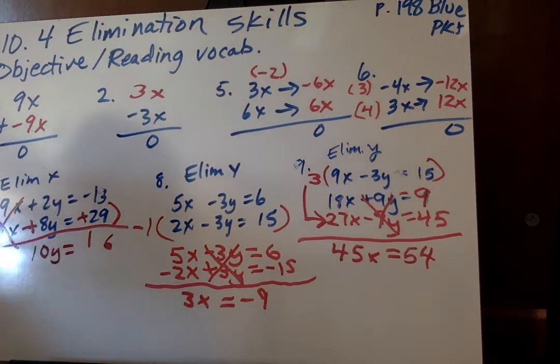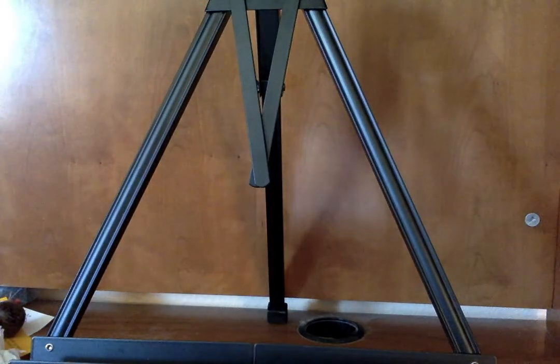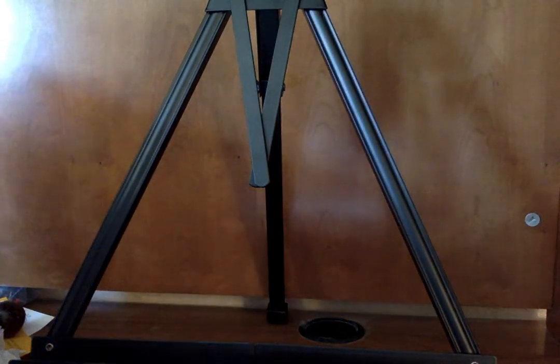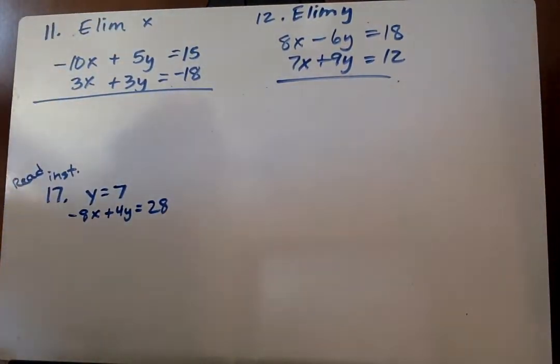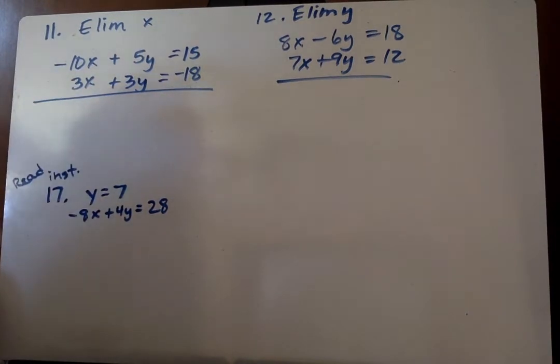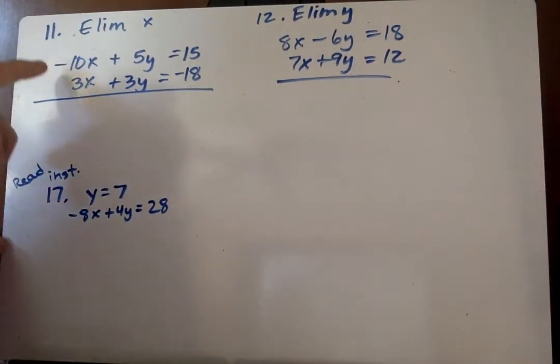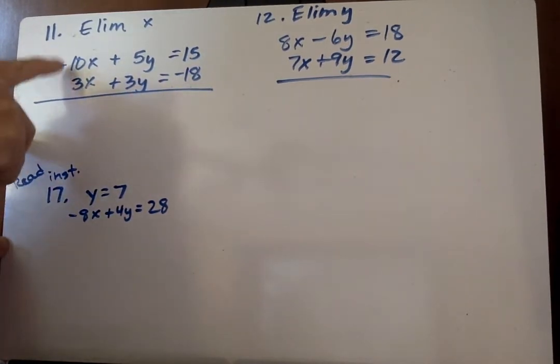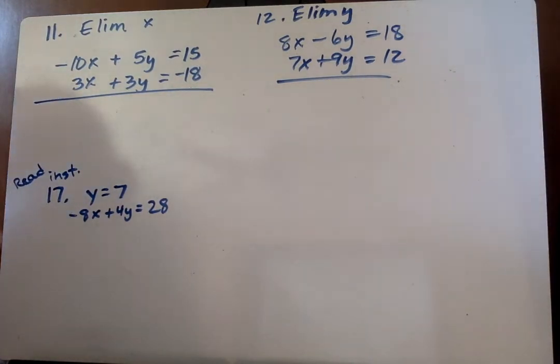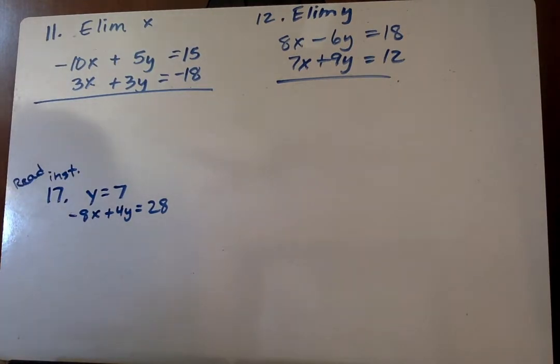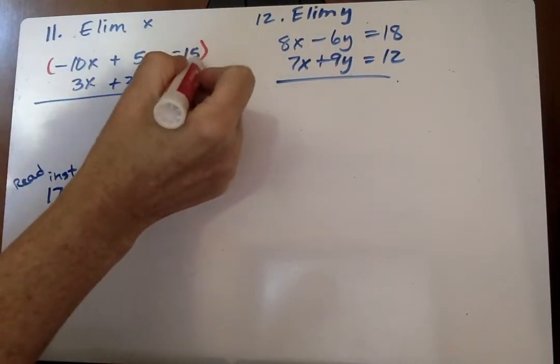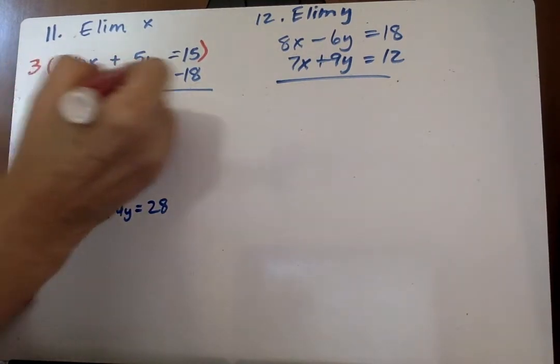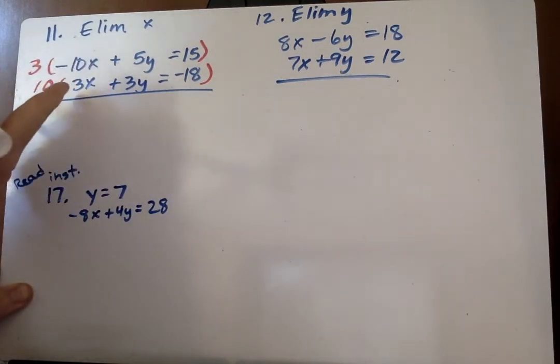Next, I'm going to go on to the next page and do problem 11. Here it says I'm going to eliminate x. So I say, what is the least common multiple? On the other ones, I only had to change one equation. Here, I'm going to have to change both because 3 doesn't go into 10 evenly. What is the least common multiple between 10 and 3? And if you can't think of any, just multiply the two together. 10 times 3 is 30, and that actually is going to be our least common multiple. I'm going to go ahead and multiply this by 3, and that will give me negative 30x. And then this one, I'm going to multiply by 10, and this will give me positive 30x.